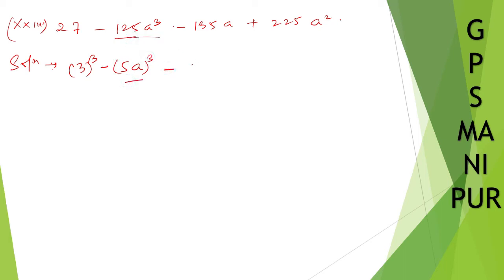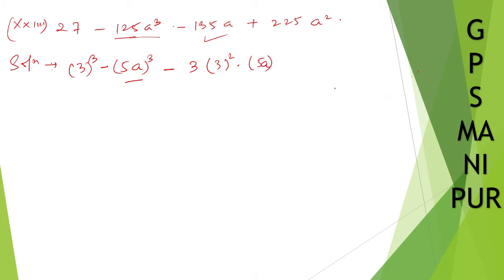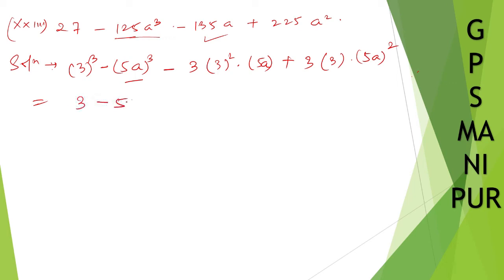We can write this as (5a)³ minus thrice a squared b, where a squared and b is 5. Then 3×9 is 27, 27×5 is 135 — that gives us the 135a term. And the last term, 225: thrice ab squared gives (5a) whole squared, so 25a squared times 9 is 225. So the expression is in the form a cube minus b cube minus thrice a squared b plus thrice ab squared, which I can write as (3 − 5a) whole cube.